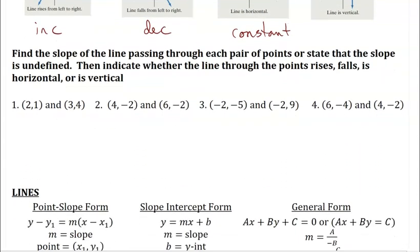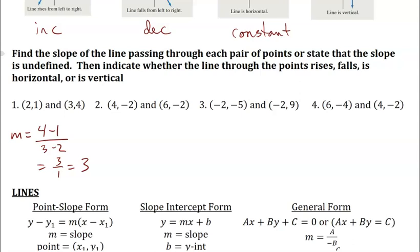A few examples. Using my first point and second point, my slope is change in y — so 4 minus 1 — over change in x — 3 minus 2 — which gives me 3 over 1, which is 3. That is a positive number, so the line through those two points is rising.